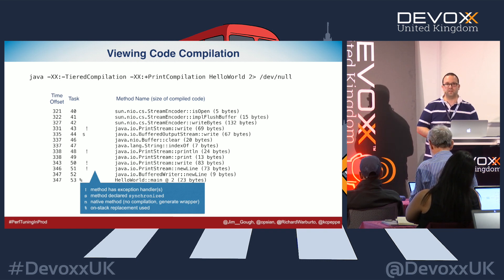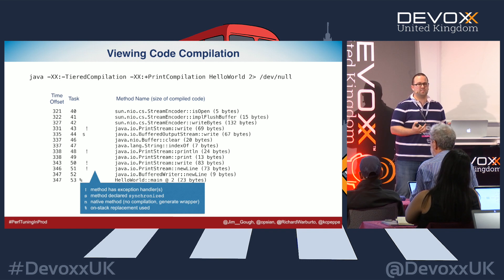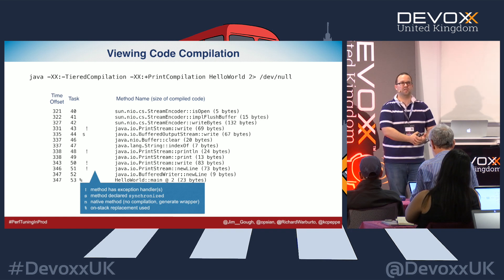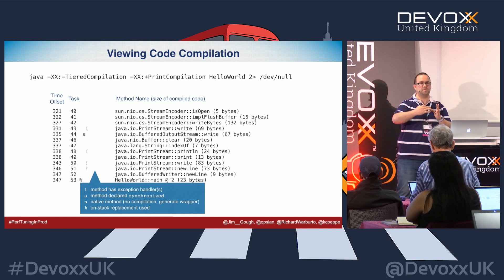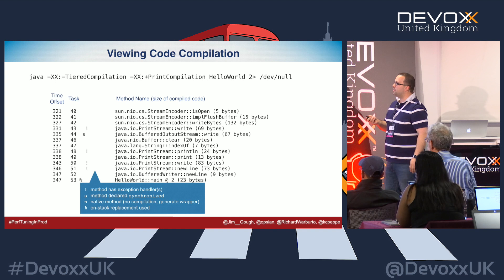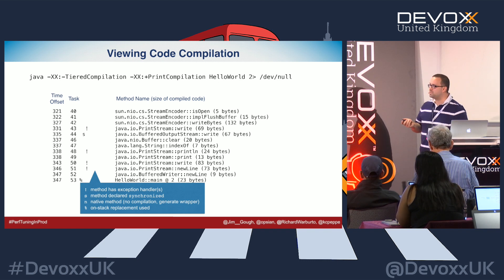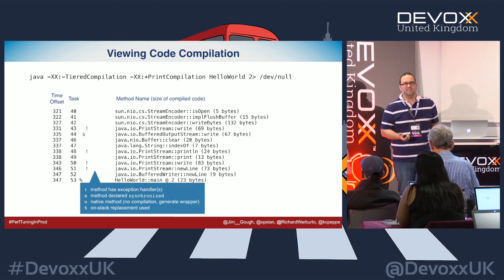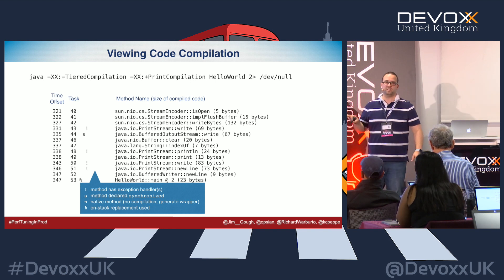Most JVM-based applications run in a loop — otherwise they'd quit quickly — polling something or waiting on something. The main body of code is inside a loop. How do we replace it with the non-interpreted version? This uses on-stack replacement (OSR, shown as the percent sign): the JVM runs through your code interpreted even inside a loop, stops at a safe point, and points you over to the native instructions. You'll also see things like stream encoder, buffered output stream — all these things used behind the scenes are brought in and compiled for you.